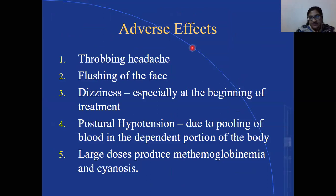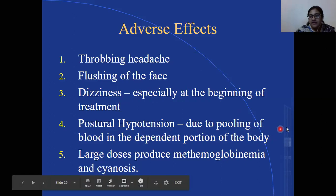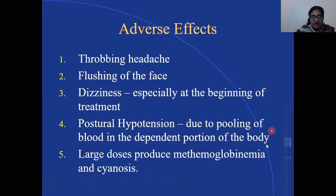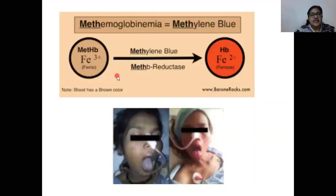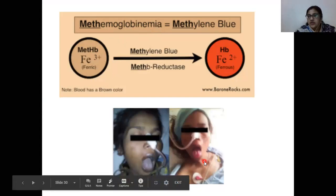Adverse effects of nitrates include throbbing headache, flushing of the face, dizziness especially at the beginning of treatment, and postural hypotension due to pooling of blood in dependent portions of the body — which is a limiting factor for giving the medicine. Large doses produce methemoglobinemia and cyanosis. In methemoglobinemia, the iron in hemoglobin is oxidized to the Fe³⁺ (ferric) state rather than Fe²⁺ (ferrous).